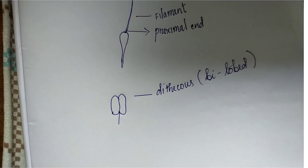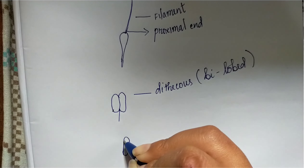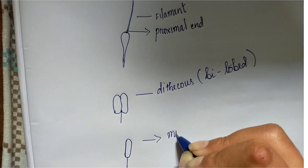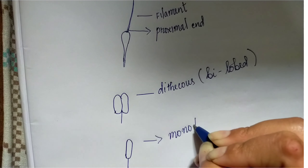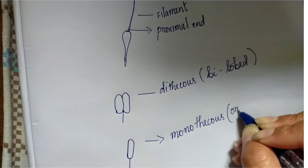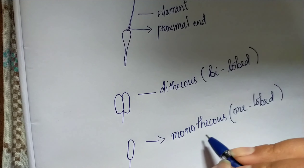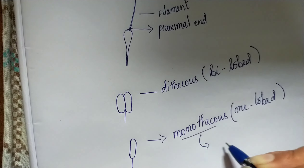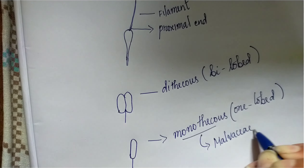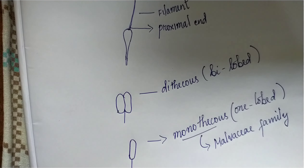Whereas in some plants, the anther has only one lobe. This is called monothecous, consisting of one lobe. Monothecous is very common in the Malvaceae family.